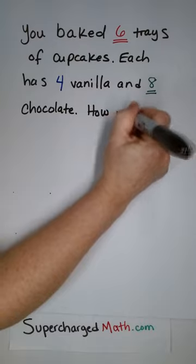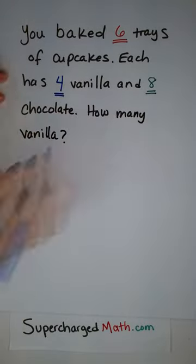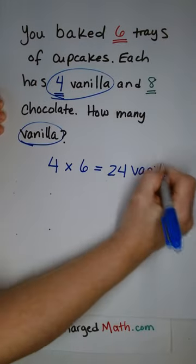You bake six trays of cupcakes. Each one has four vanilla and eight chocolate. How many total vanilla cupcakes did you make?